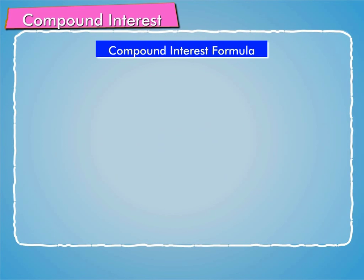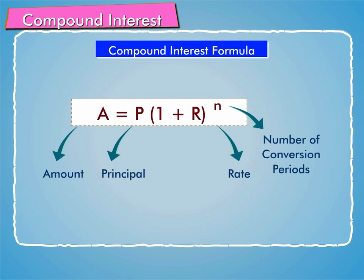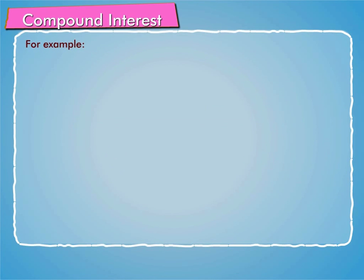Compound interest formula: A is equal to P into 1 plus R raised to the power n, where A stands for amount, P stands for principal, R stands for rate, and n stands for number of conversion periods.